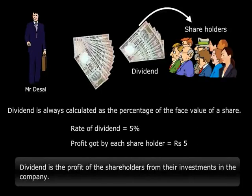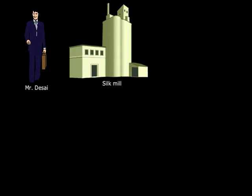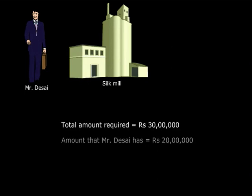Mr. Desai is an entrepreneur who wants to set up his silk mill. For this he requires rupees 30 lakh to invest. However, he does not have that much money with him — he has only 20 lakh. So this means that he requires 10 more lakh.